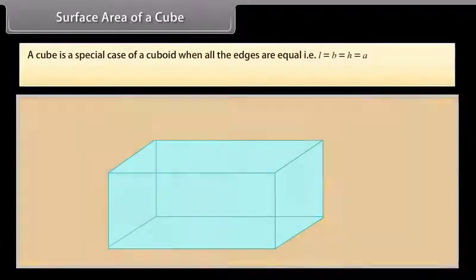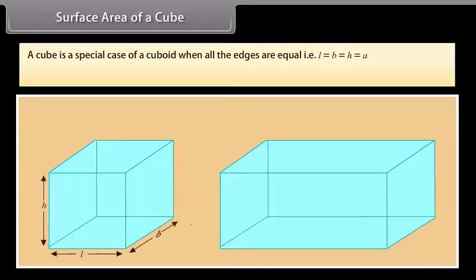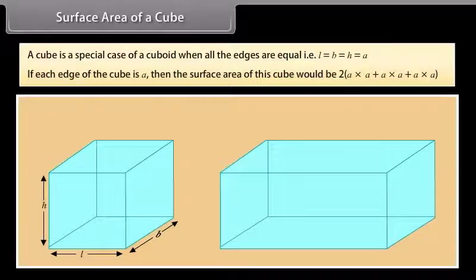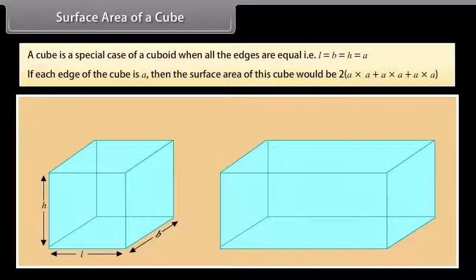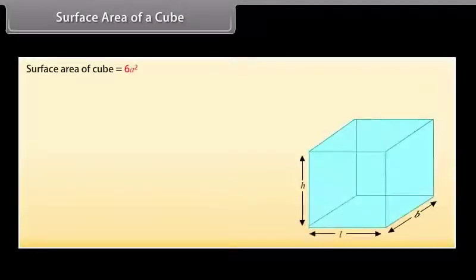Surface area of a cube. A cube is a special case of a cuboid when all the edges are equal, that is L = B = H. If each edge of the cube is A, then the surface area of this cube would be 2(A×A + A×A + A×A), or we can write it as 6A².